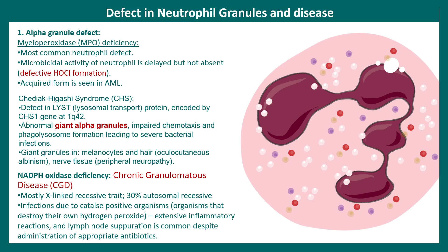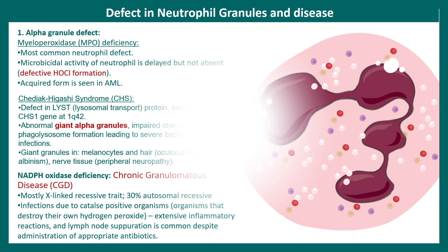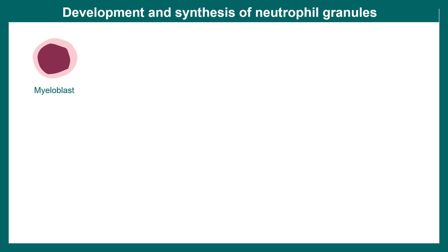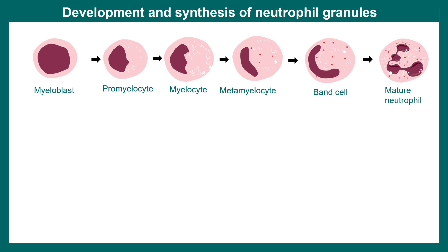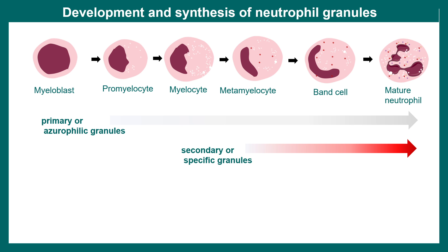All granules are developed at different timelines during neutrophil maturation. Neutrophils mature through stages: myeloblast, promyelocyte, myelocyte, metamyelocyte, band cells, and finally the mature neutrophil. Primary or azurophilic granules are the first to appear, roughly from the myelocyte stage. Secondary granules appear from the metamyelocyte stage, whereas tertiary granules appear later as band cells progress to the mature neutrophil state.